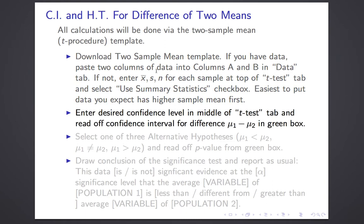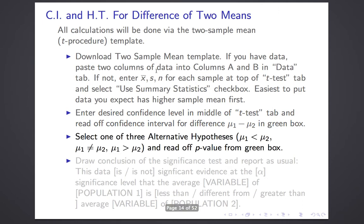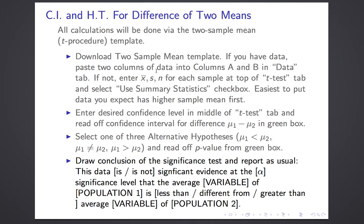Then go to the t-test tab, enter the desired confidence level, and read off the confidence interval for mu1 minus mu2 in the green box. If you're doing a hypothesis test, there's only one null hypothesis: the two means are equal, just like with the two-sample proportion. There are three alternate hypotheses: mu1 is less than mu2, different from mu2, or greater than mu2. You choose which one and read off the p-value from the green box. Our conclusion is expressed as: this data is or is not significant evidence at the alpha significance level that the average of the variable in population 1 is less than, different from, or greater than the average in population 2.